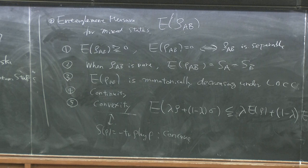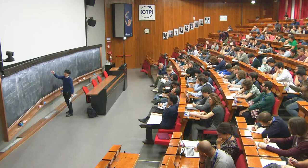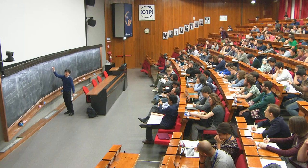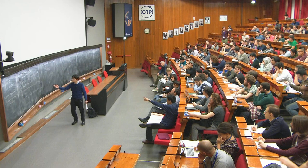There is a theorem: if conditions one through five are satisfied, then we can show that any such measure E always sits in the following range. E_D is something called entanglement distillation — how many EPR pairs we can extract from the system by LOCC.